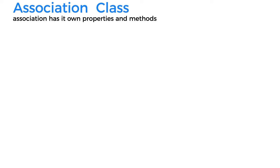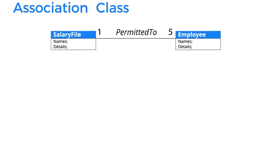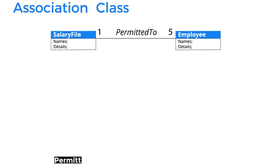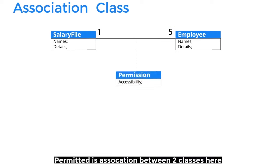An association class is a type in which we need to make a class of the association between two classes. For example, a salary file is permitted to one to five employees. Here, the permission is the association between two classes. If we make a different class of this association having its own qualities or properties, this will be an association class.